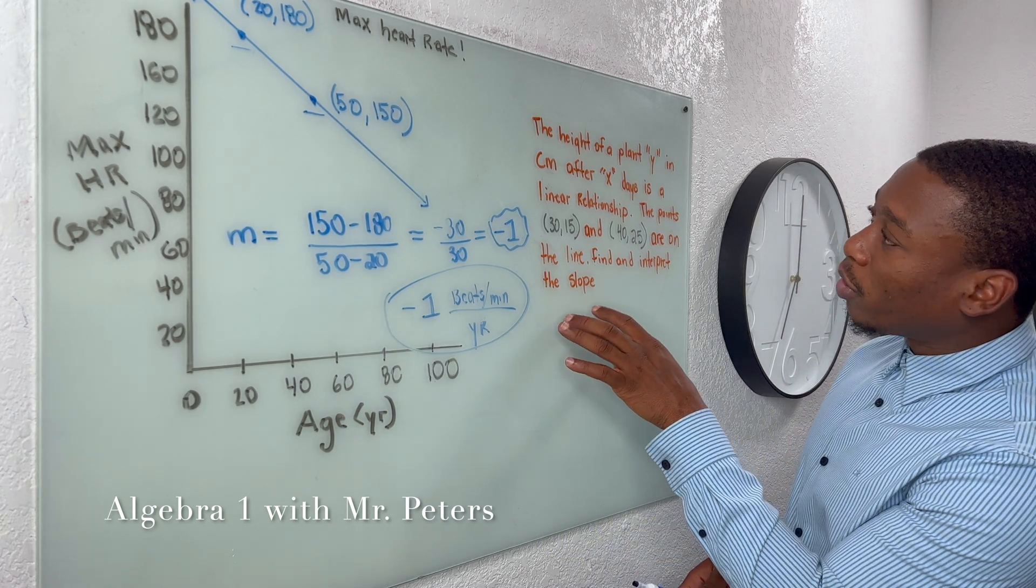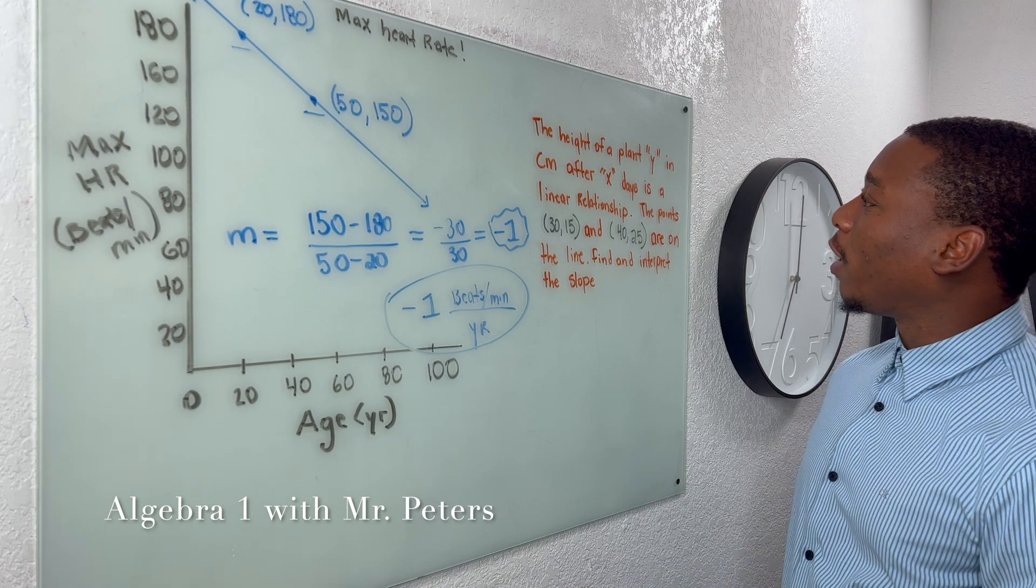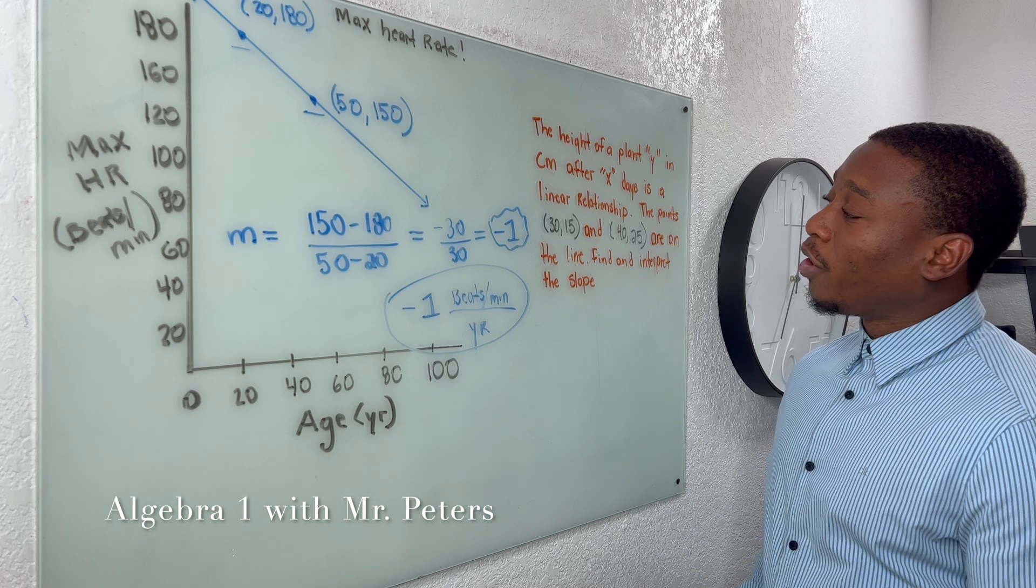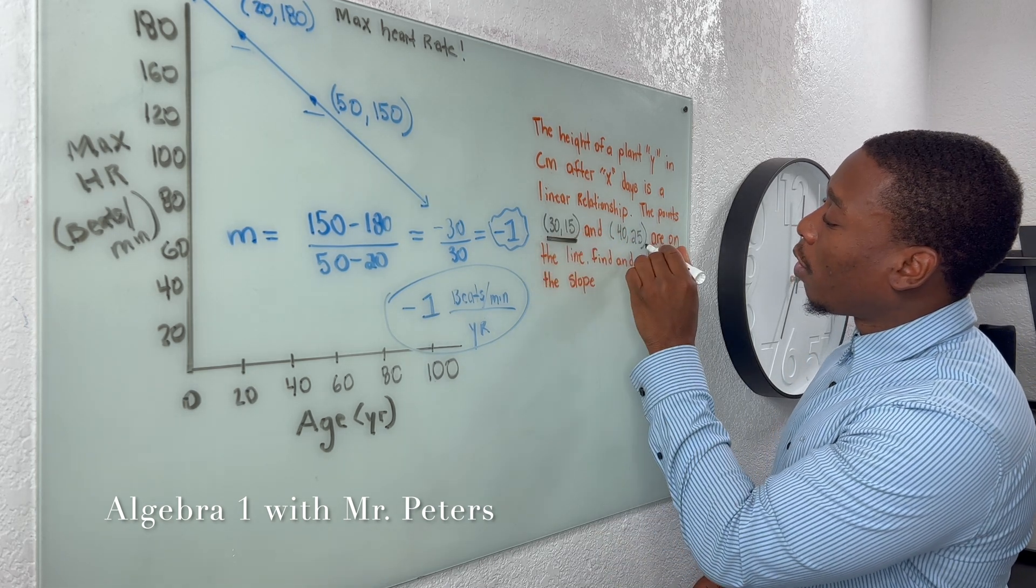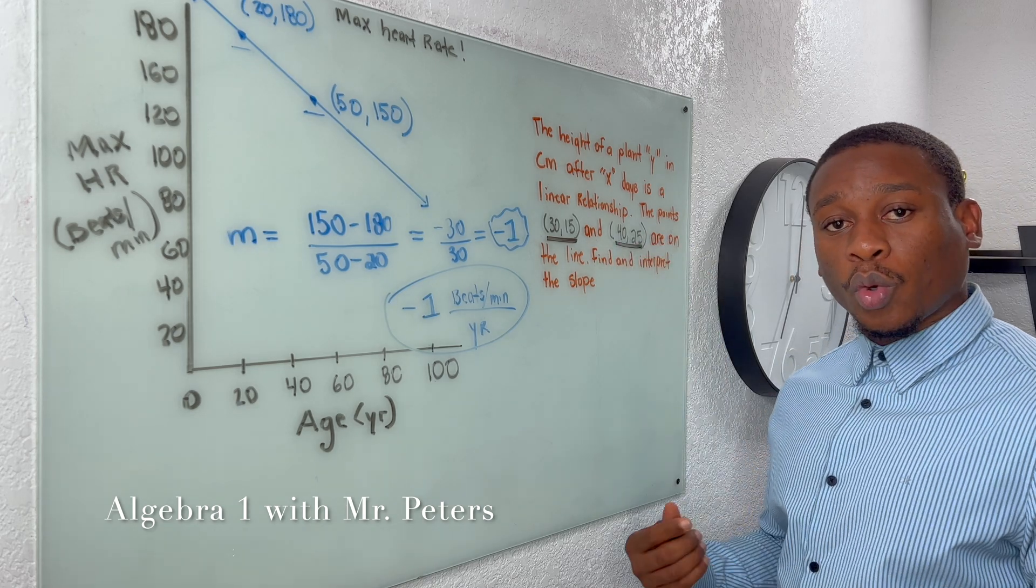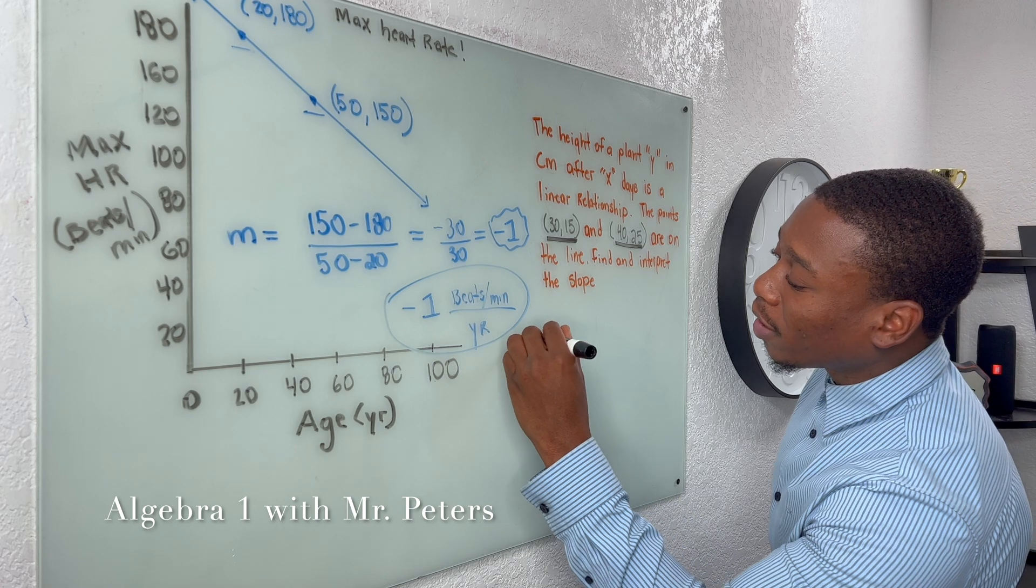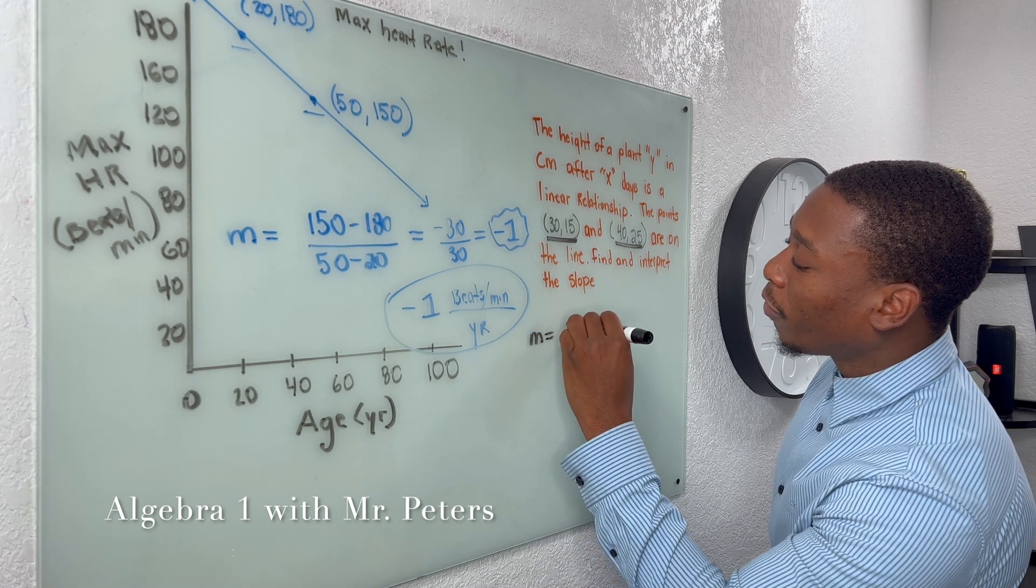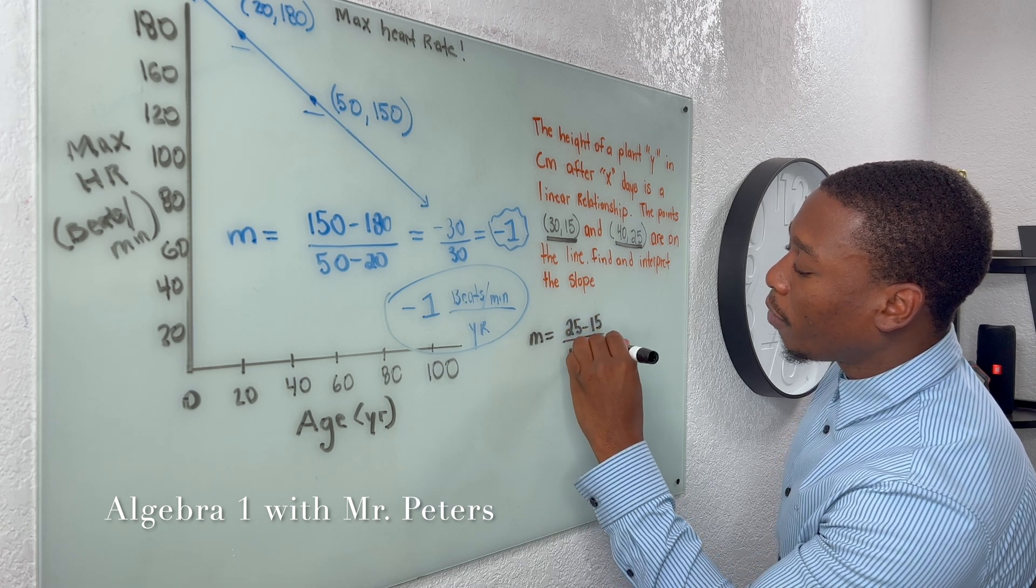Now, problem number two. They give us a word problem and it says the height of a plant in Y, in centimeters, after X days is a linear relationship. They give us two points and then they ask us to find the slope and interpret what it means. So once we set this problem up, we have M is equal to 25 minus 15 divided by 40 minus 30.